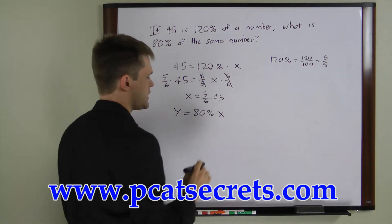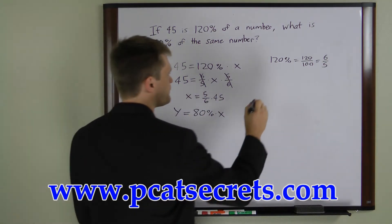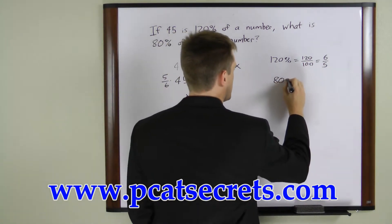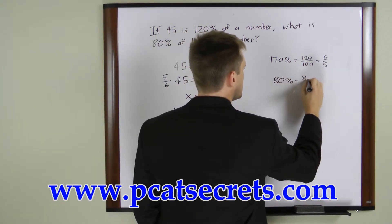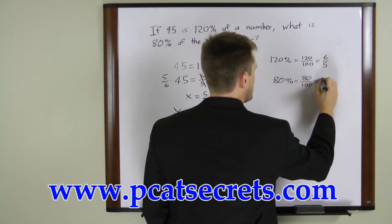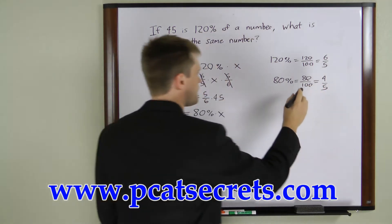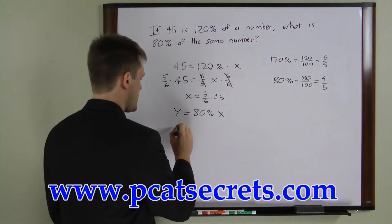Now let's convert 80% to a fraction also. 80% equals 80 over 100 which is the same as 4 over 5. And now we can substitute that back into here.